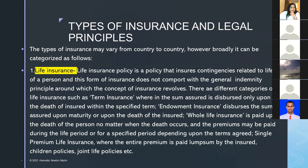The type of insurance varies from country to country because different laws are prevalent in different jurisdictions. However, broadly speaking, the types of insurance available across countries can be categorized. Life insurance is the most prominent — available worldwide. A life insurance policy covers contingencies related to the life of a person.